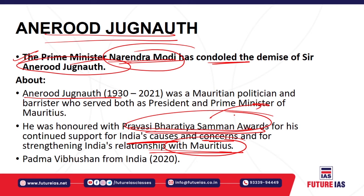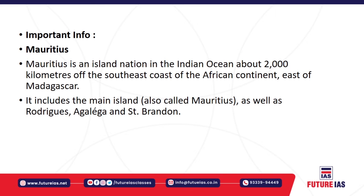The Pravasi Bharatiya Samman Award was constituted by the Ministry of Overseas Indian Affairs in conjunction with Pravasi Bharatiya Divas — celebrated on the day Mahatma Gandhi returned to India — to honour exceptional and meritorious contributions by people of Indian origin in their chosen field. This award is conferred by the President of India. Anirudh Jugnauth was also awarded the Padma Bhushan in 2024 for his outstanding contribution to the India-Mauritius relationship.